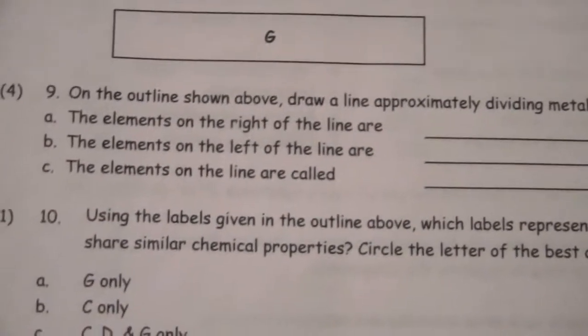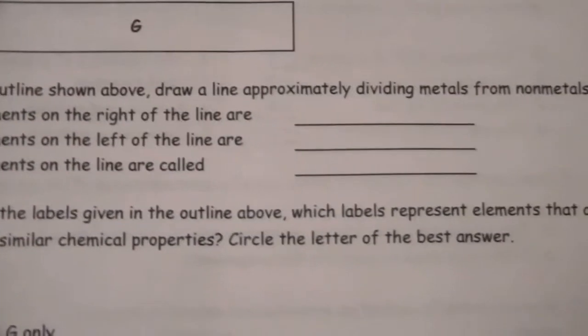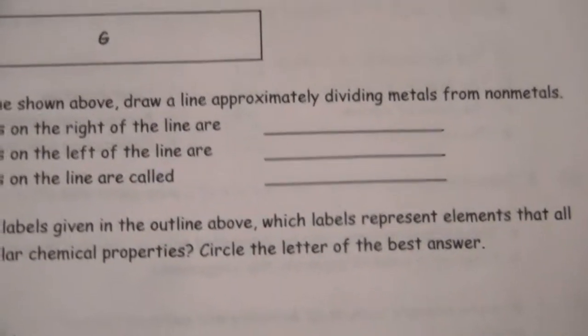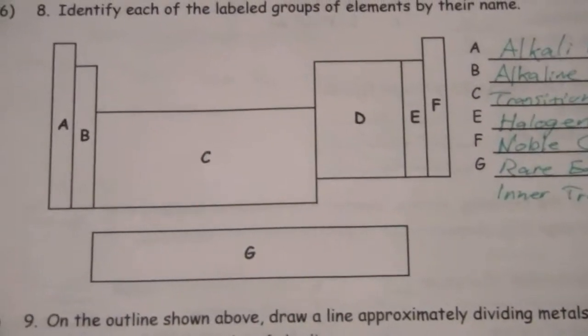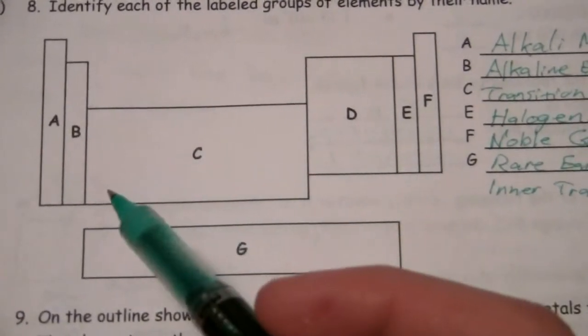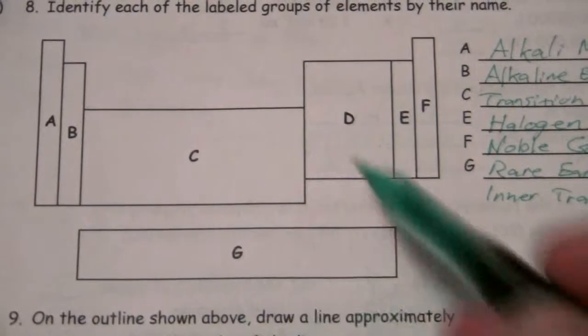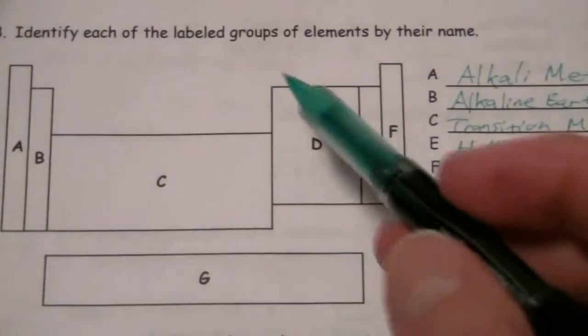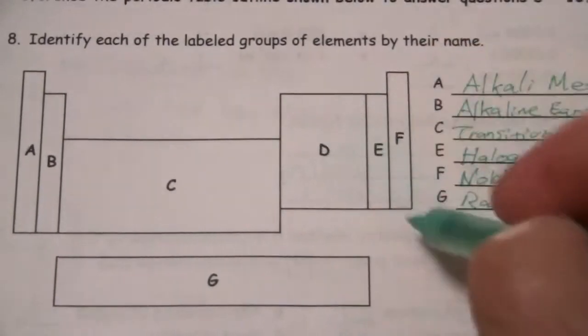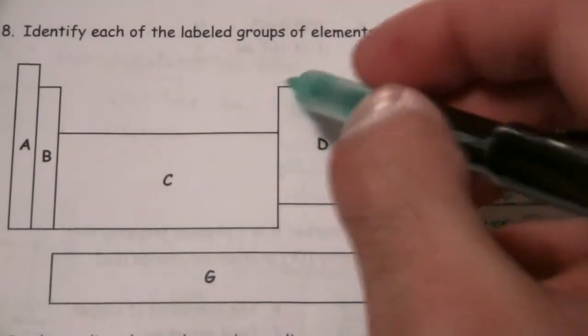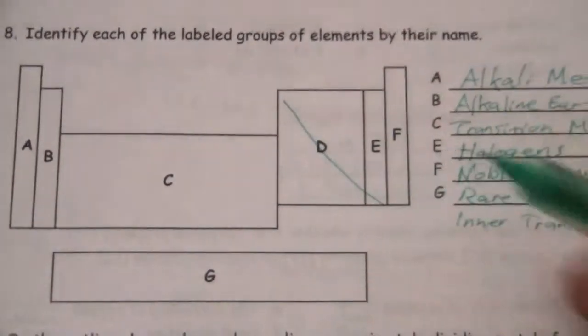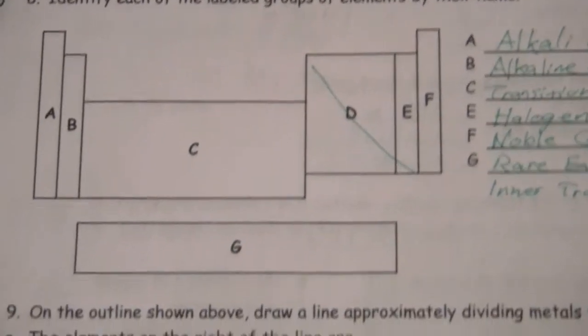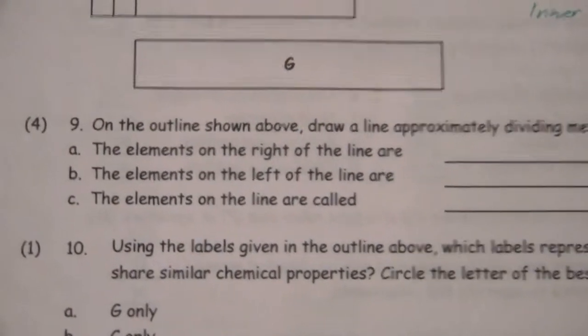Next, it says, on the outline shown above, draw a line approximately dividing metals from non-metals. So, the division between the metals, which comprises the bulk of the periodic table, and the non-metals is somewhere in this region. And it doesn't have to be exactly perfect, just something along those lines is really all that is necessary.